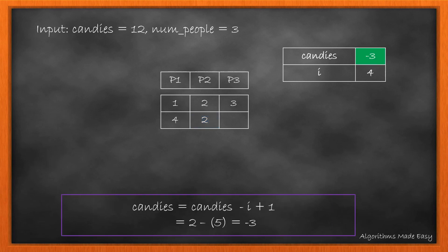We update the remaining candies. Now, as the candies become less than or equal to 0, we stop distributing.